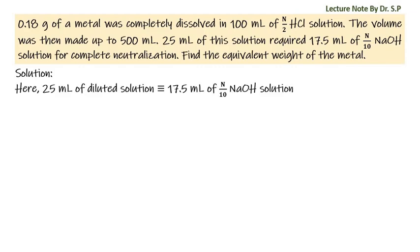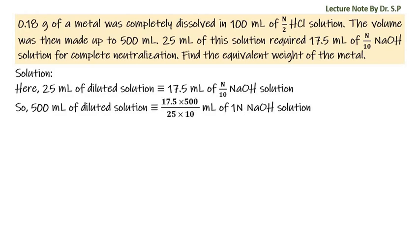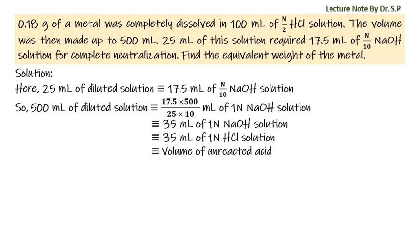Solution: Here, 25 ml of diluted solution is equal to 17.5 ml of N by 10 NaOH solution. So 500 ml of diluted solution is equal to 17.5 times 500 by 25 times 10 ml of 1N NaOH solution, that is equal to 35 ml of 1N NaOH solution, which is equal to 35 ml of 1N HCl solution.